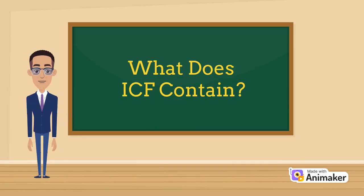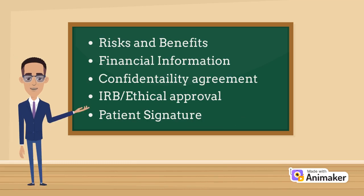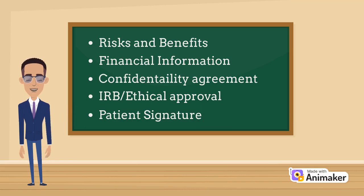Let's look into what are the key points seen in ICF. Study title, research objective, study procedure, duration of the study, participants' eligibility like age and health conditions, risks and benefits, financial information like compensation and reimbursement, confidentiality agreement, IRB and ethical approval from government, and patient signature and guardian signature for children participants.